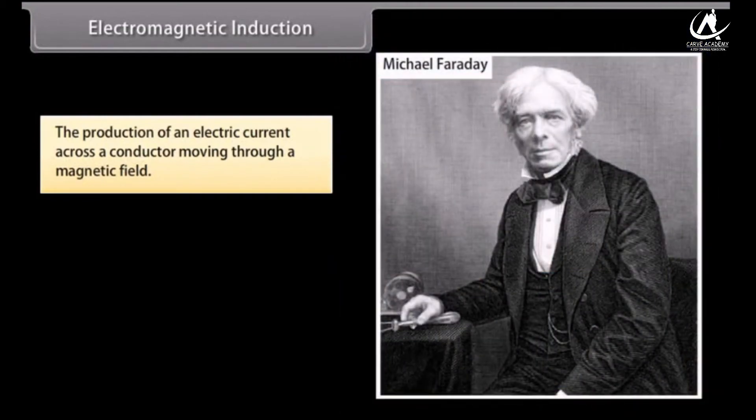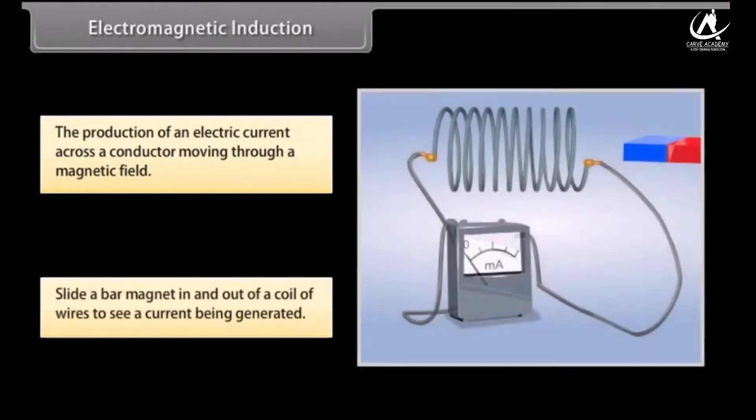Michael Faraday was a British scientist, chemist, physicist, and philosopher who discovered the magnetic field, electromagnetic induction, diamagnetism, and electrolysis. His experiments included the discovery of generating currents by moving a magnet. Let us try sliding a bar magnet in and out of a coil of wires. You see that the wires generate a current. This is known as electromagnetic induction.